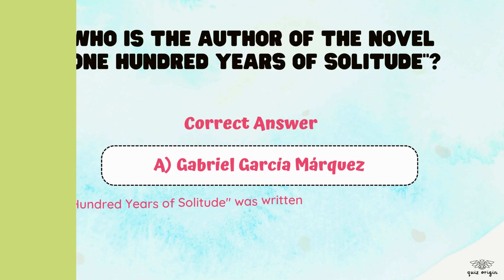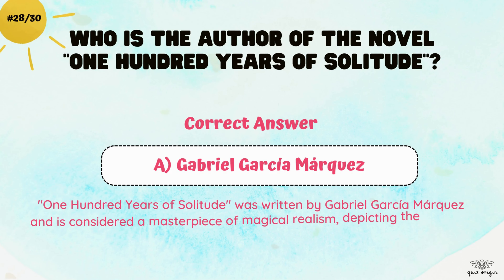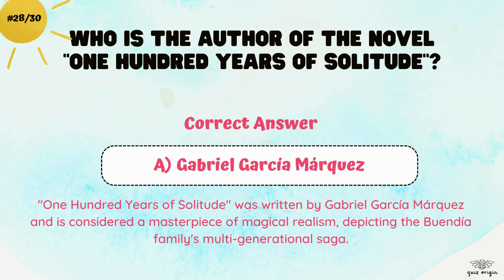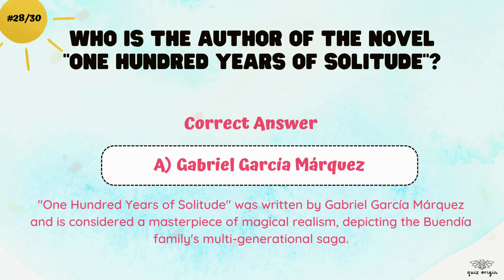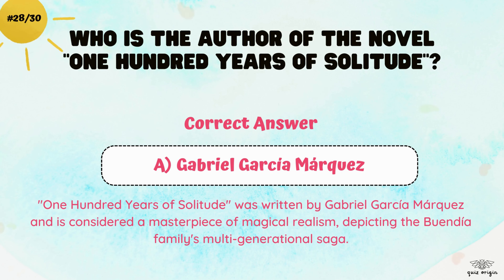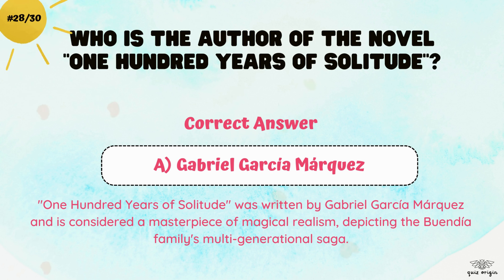The correct answer is A. Gabriel García Márquez. 100 Years of Solitude was written by Gabriel García Márquez and is considered a masterpiece of magical realism, depicting the Buendía family's multi-generational saga.